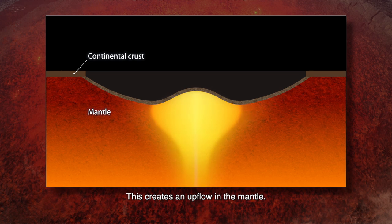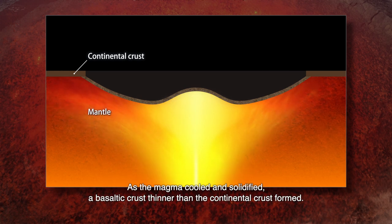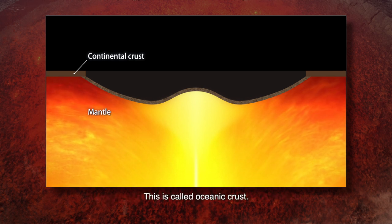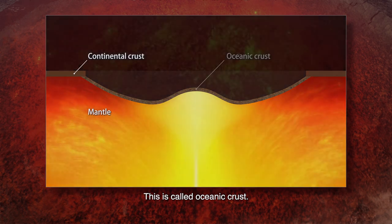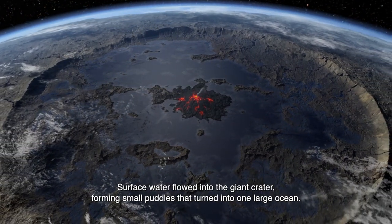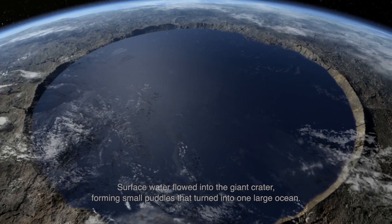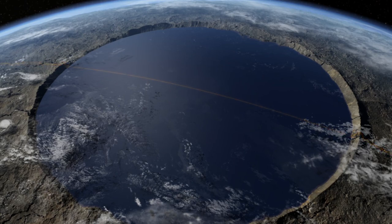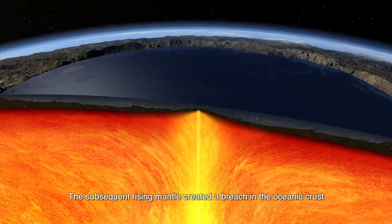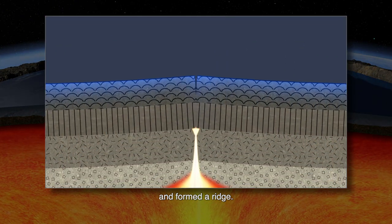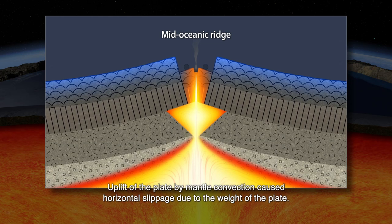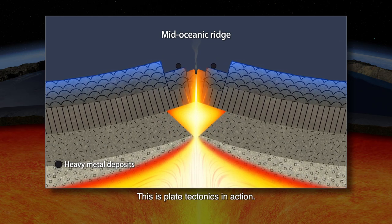This created an upflow in the mantle. As the magma cooled and solidified, a basaltic crust thinner than the continental crust formed — this is called oceanic crust. Surface water flowed into the giant crater, forming small puddles that turned into one large ocean. The subsequent rising mantle created a breach in the oceanic crust and formed a ridge. Uplift of the plate by mantle convection caused horizontal slippage due to the weight of the plate. This is plate tectonics in action.